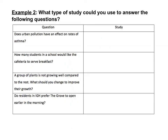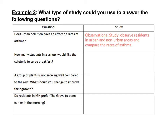Now that we know our three different types of studies, let's decide what type of study to use for the following questions. The first question: does urban pollution have an effect on rates of asthma? You'd probably be best using an observational study — you could observe residents in urban and non-urban areas and compare the rates of asthma. You wouldn't want to do an experiment because nobody wants to purposely expose themselves to pollution in the city just to see the results. It's much easier to gather data from both environments and compare.